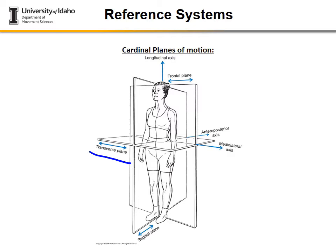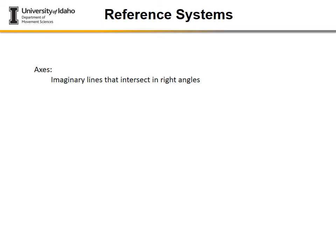The transverse plane divides the body into inferior and superior portions and is intersected by the longitudinal axis. Much of the motion in the transverse plane is rotation. It's less commonly captured in biomechanical analysis labs because it can be difficult to measure — especially at the knee. Axes are imaginary lines that intersect the planes at right angles, and origins are common points of intersection between multiple axes.